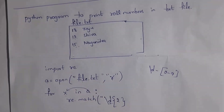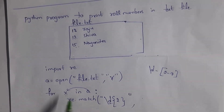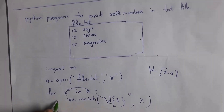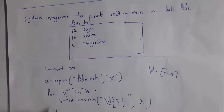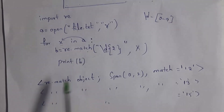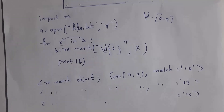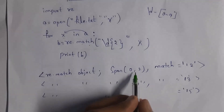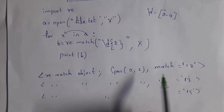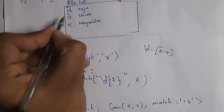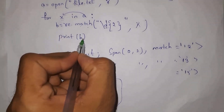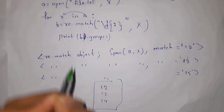Inside the loop, write b equal to re.match with pattern \d{2} in double quotations and x as the string — since x holds each line. \d{2} matches exactly two digits. Print b will show the match object with span (0, 2) and match value. To print only the numbers — 12, 13, 15 — instead of the full match object, write b.group() which extracts just the matched number from each line.